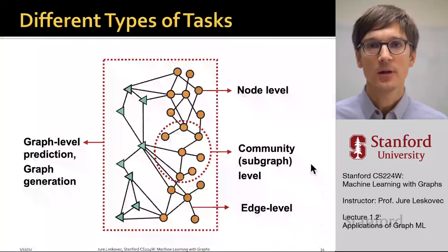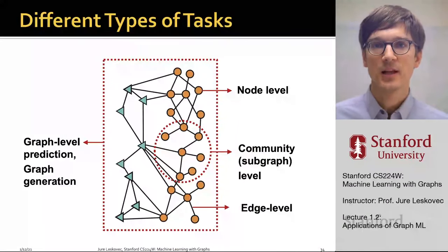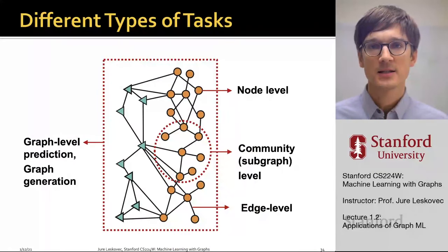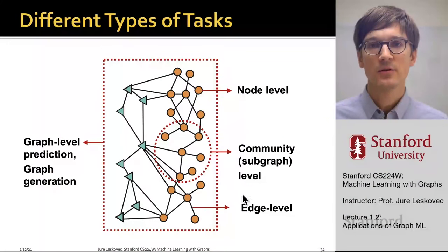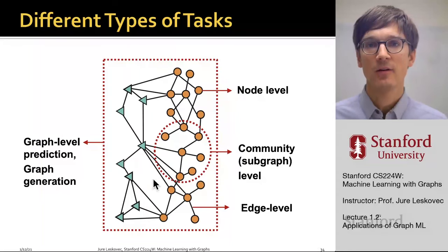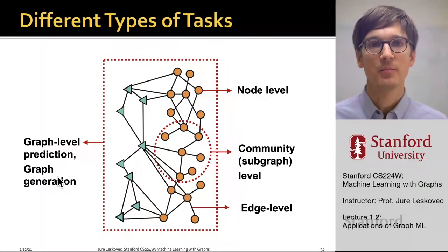In graph machine learning, we can formulate different types of tasks. We can formulate tasks at the level of individual nodes, at the level of edges, which are pairs of nodes, and we can identify tasks at the level of subgraphs of nodes, as well as tasks at the level of entire graphs, like graph-level prediction or graph generation.